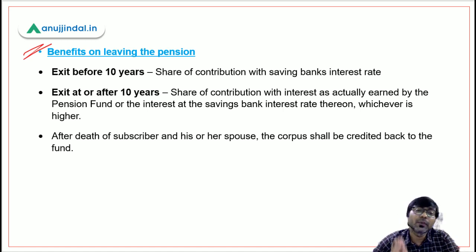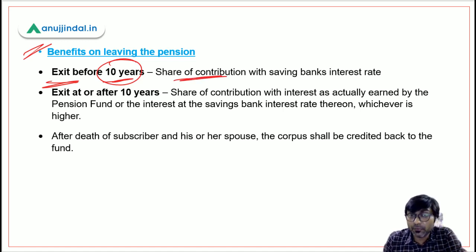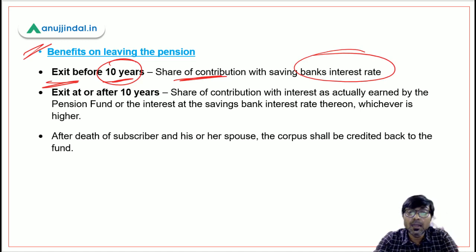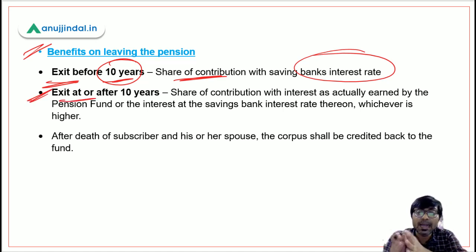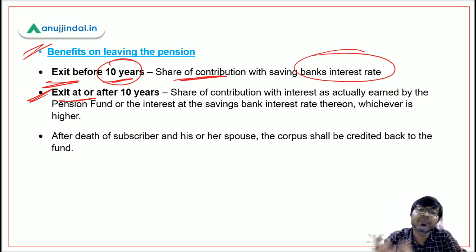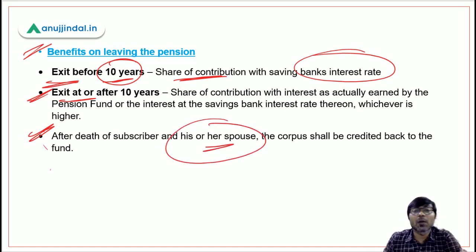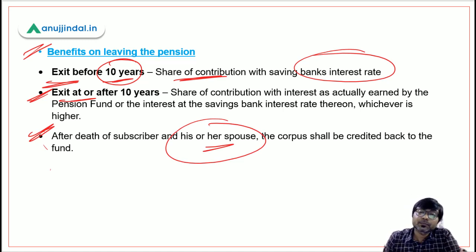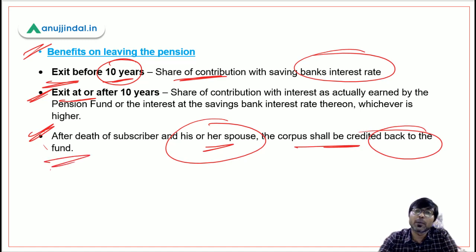Now let's talk about the benefits on leaving the pension scheme. If the farmer exits before 10 years, he will get back the share of contribution along with interest at the savings bank interest rate. If the farmer exits at or after 10 years, he will receive the share of contribution along with interest at the rate actually earned by the pension fund or the savings bank interest rate, whichever is higher.